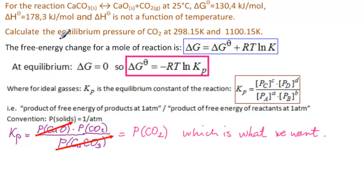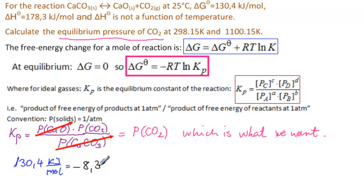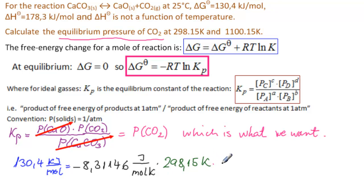So the equilibrium pressure of CO2 is what we want — we multiply by 1 atm. Now substituting: ΔG° = 130.4 kJ/mol = −8.31446 J/(mol·K) × 298.15 K × ln(P(CO2)). We now solve this for P(CO2).